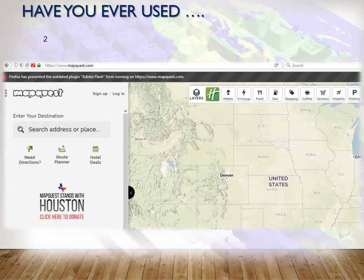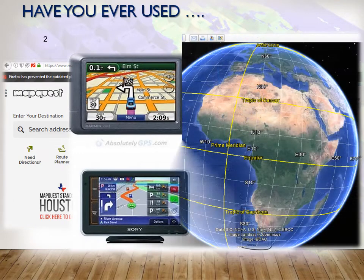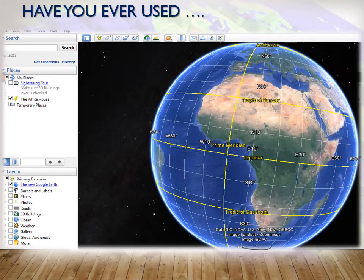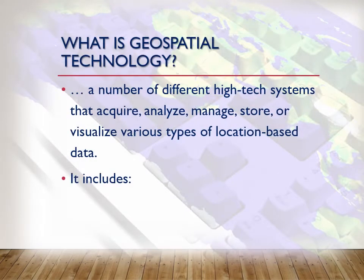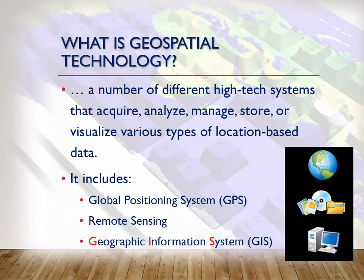Before I talk about GIS, I often ask people if you've used some of these tools. In this example, we're using MapQuest. Maybe in the past you've used GPS devices, or probably you have used Google Earth. If you've used any of these types of resources, you have used geospatial technology. Geospatial technology is a broader definition of anything that has geographic information. It includes global positioning systems, remote sensing, and this course, geographic information systems.